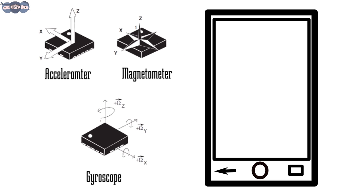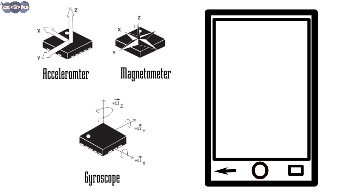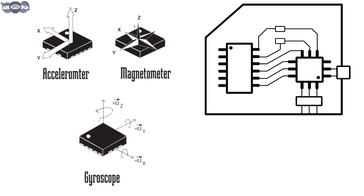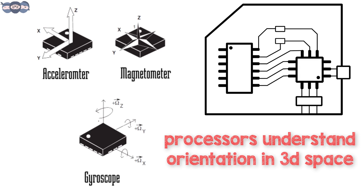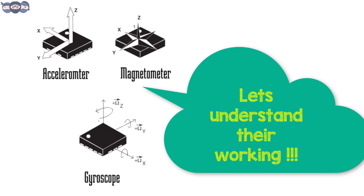We all have heard about accelerometer, gyroscope and magnetometers built into our smartphones. Using these sensors, smartphone processors understand the orientation of the phone in 3D space and takes actions accordingly. Let's take some of our time to understand how these actually work.